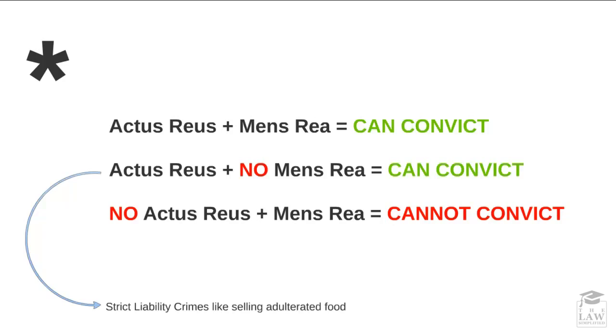When you have an actus reus and a mens rea, you can convict a person. When there is an actus reus and no mens rea, you can still convict a person — because there are strict liability crimes, like selling adulterated food. However, where there is no actus reus and only a mens rea, as in an intent alone, you cannot convict.